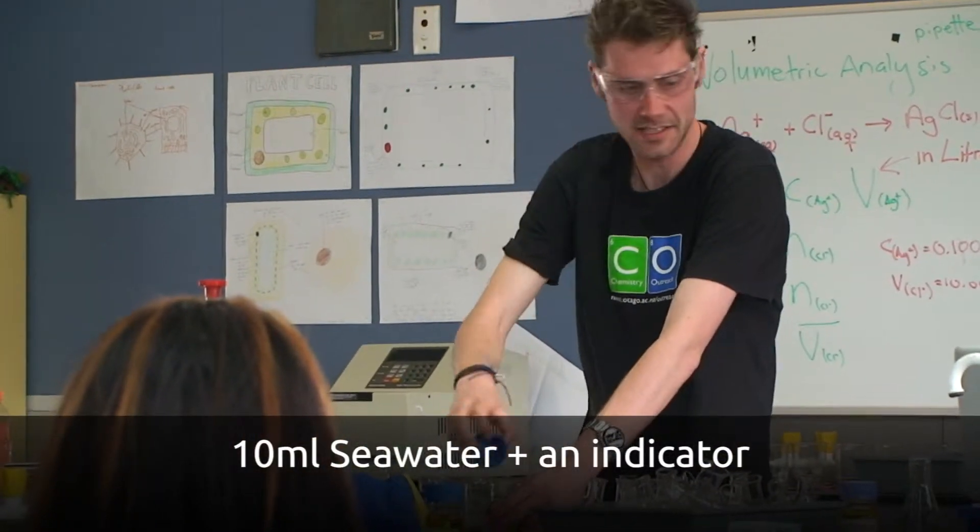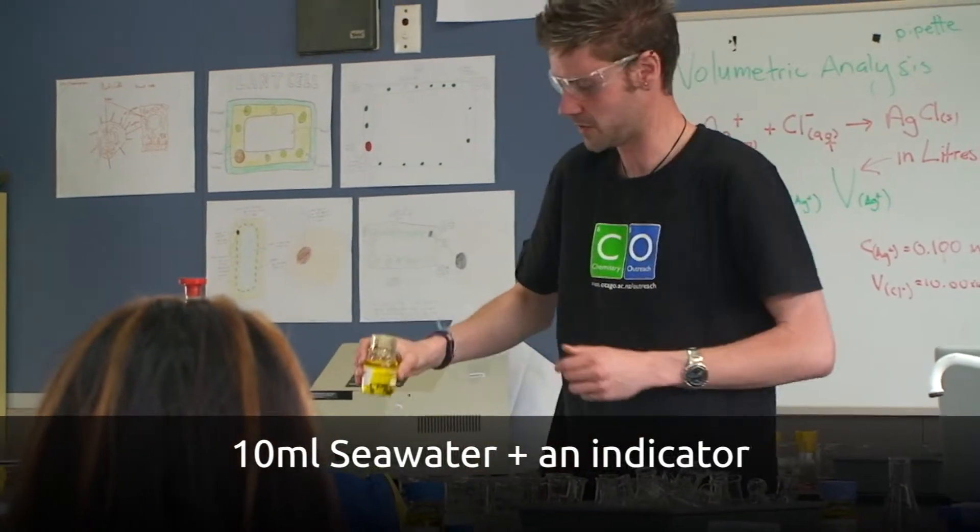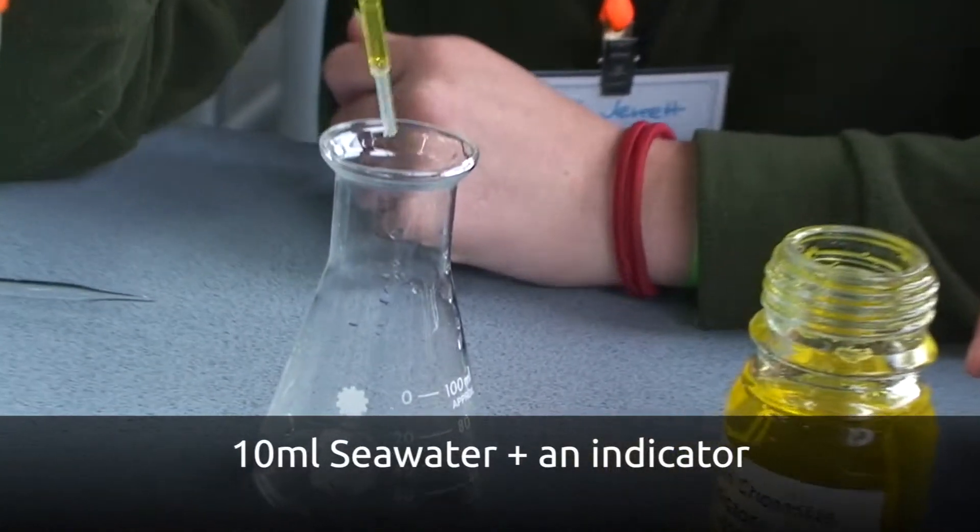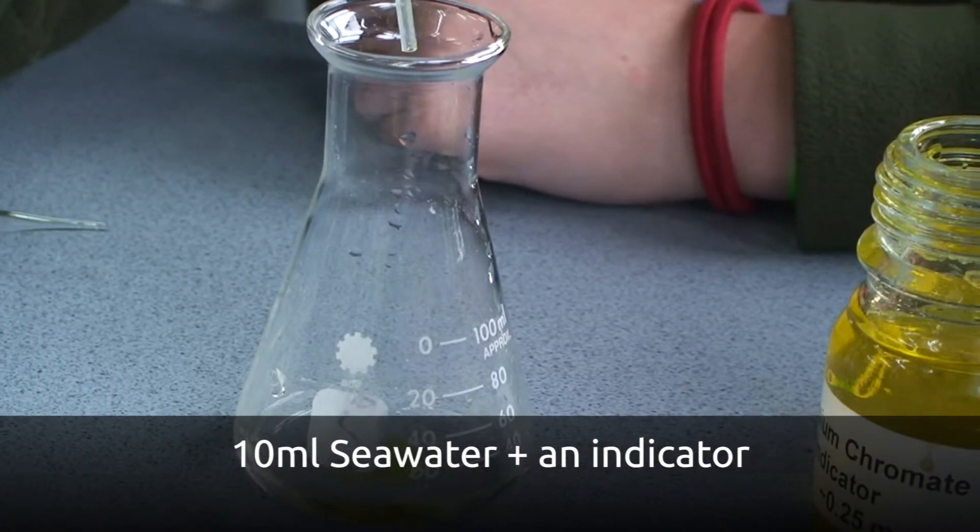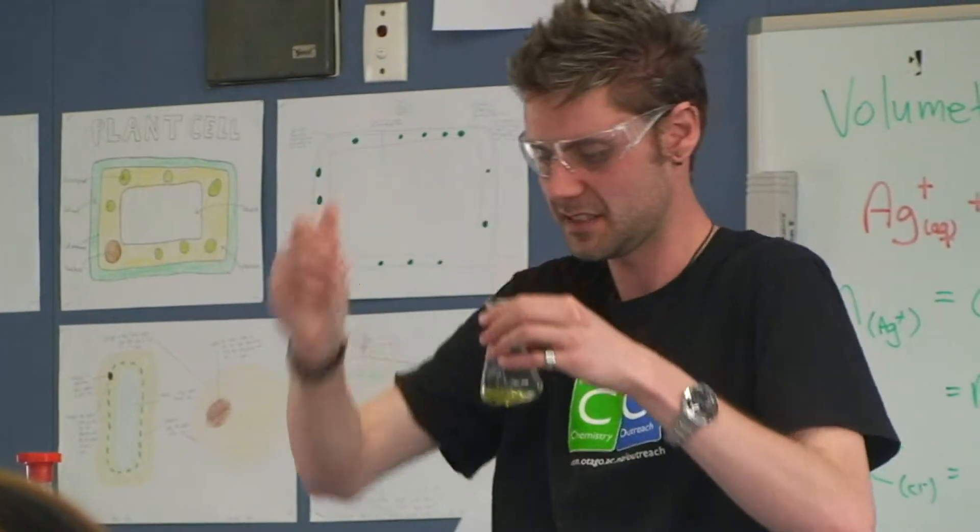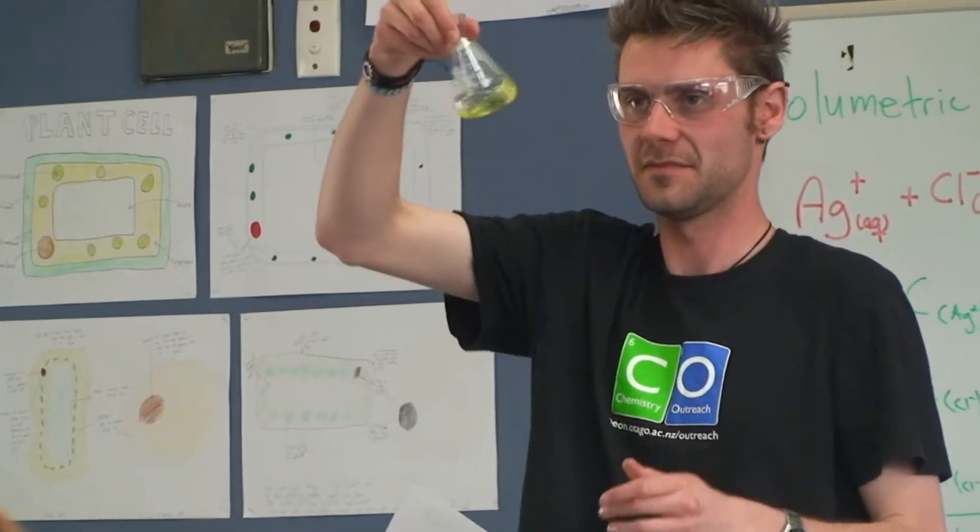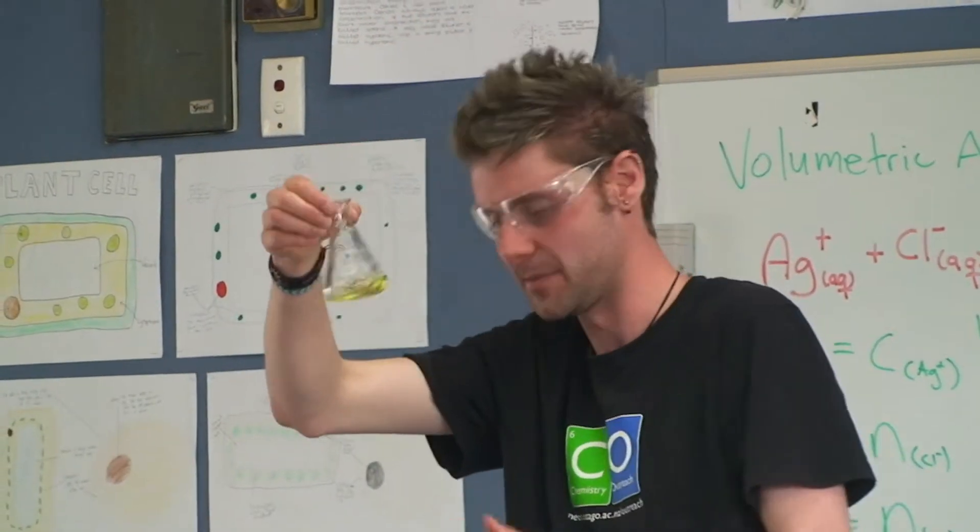And to see this, I'm going to need to add a couple of drops of this indicator. I don't want to add too much because it might start interfering with the reaction. So just 2-3 drops, that's plenty. You can see that it's gone yellow, that's the cream.